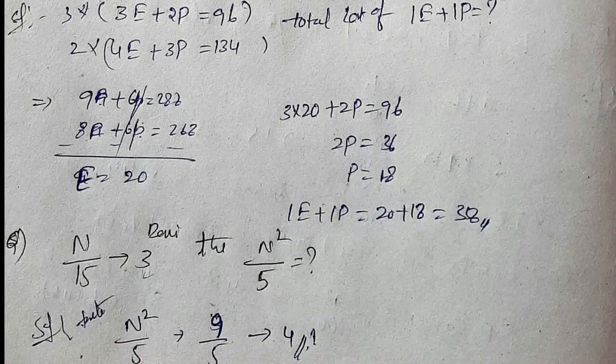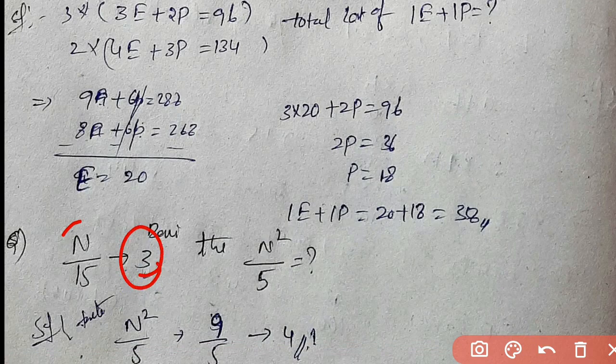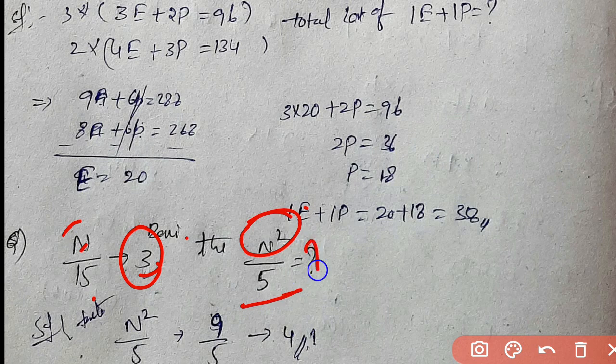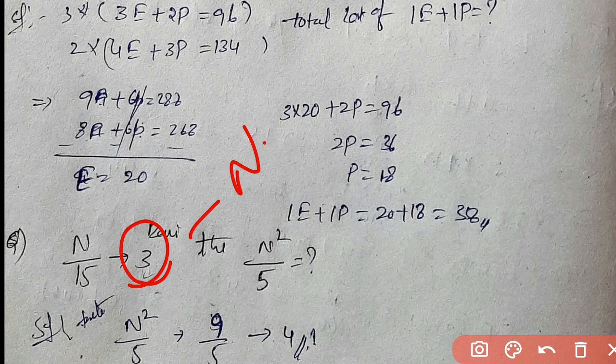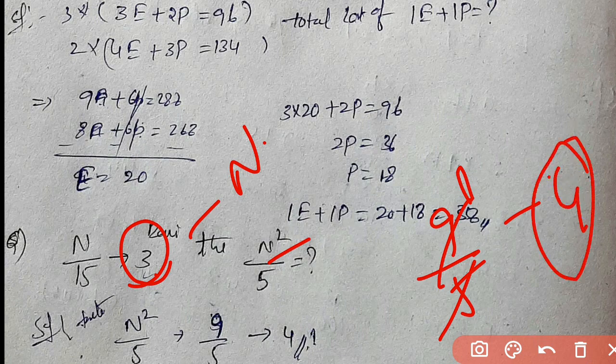One number divided by 15 gives remainder 3. If we double this number and divide by 5, what is the remainder? Remainder theorem: square the remainder and divide by new divisor. 3 squared is 9 divided by 5 gives remainder 4.